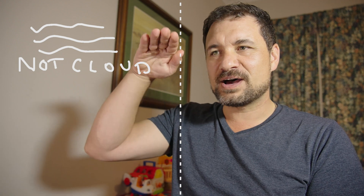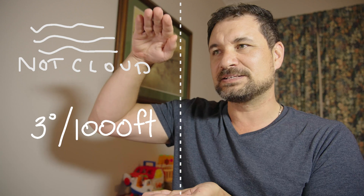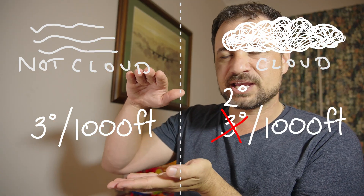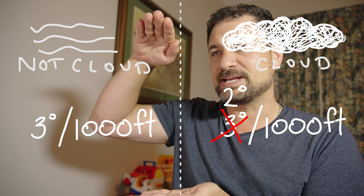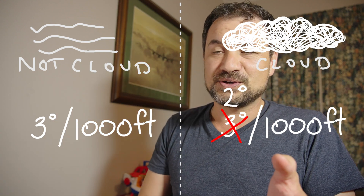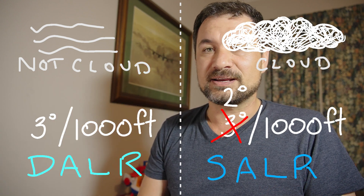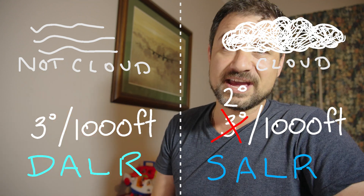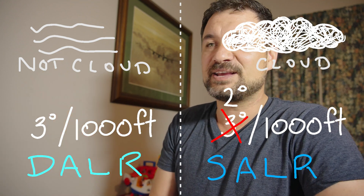The key difference between dry air and wet air — clouds or not clouds. Dry air as it rises has a greater change in temperature per height. Wet air with cloud has a lower rate of change per height. If you want to know the technical term, it's the dry adiabatic lapse rate versus the wet or saturated adiabatic lapse rate.